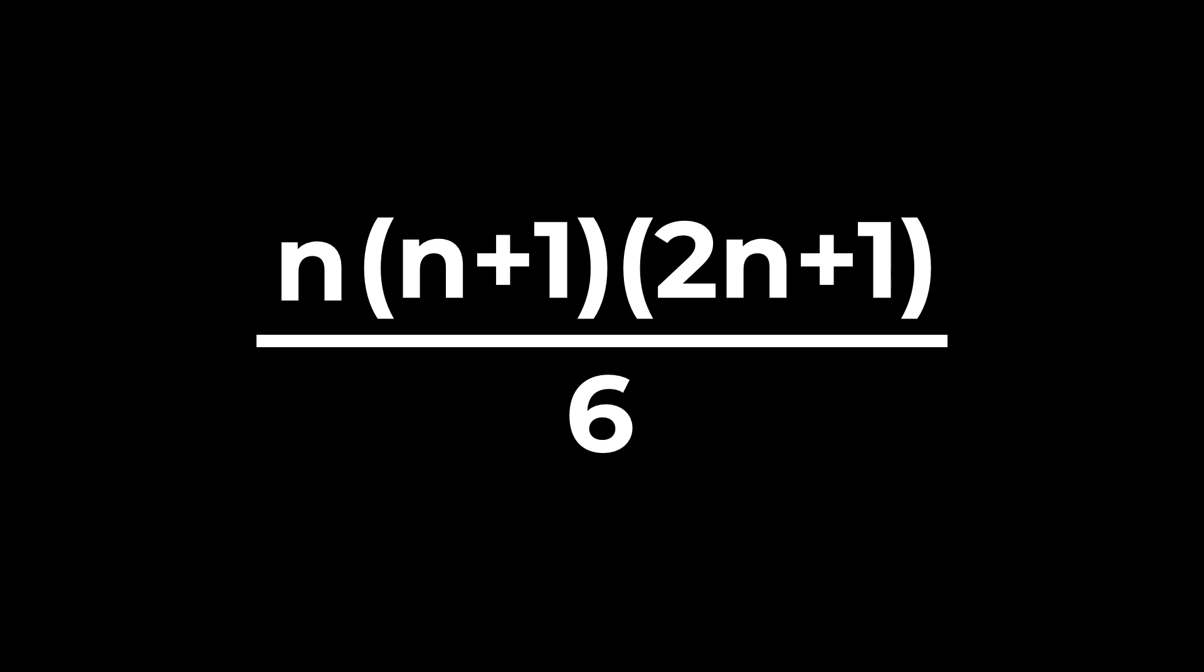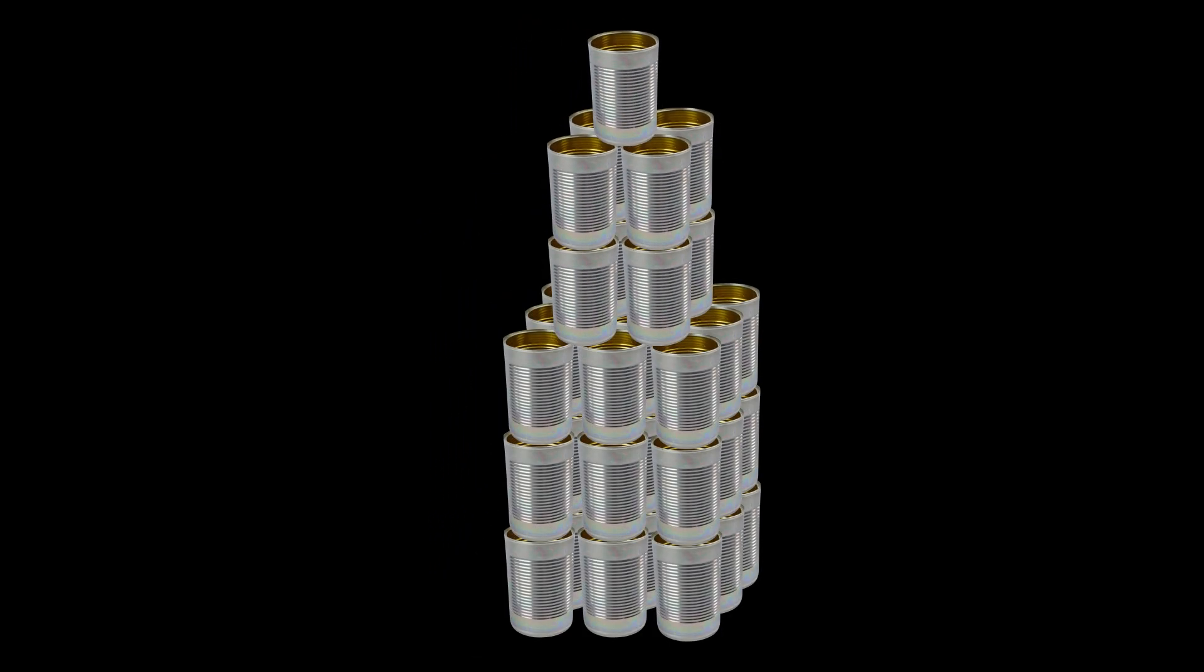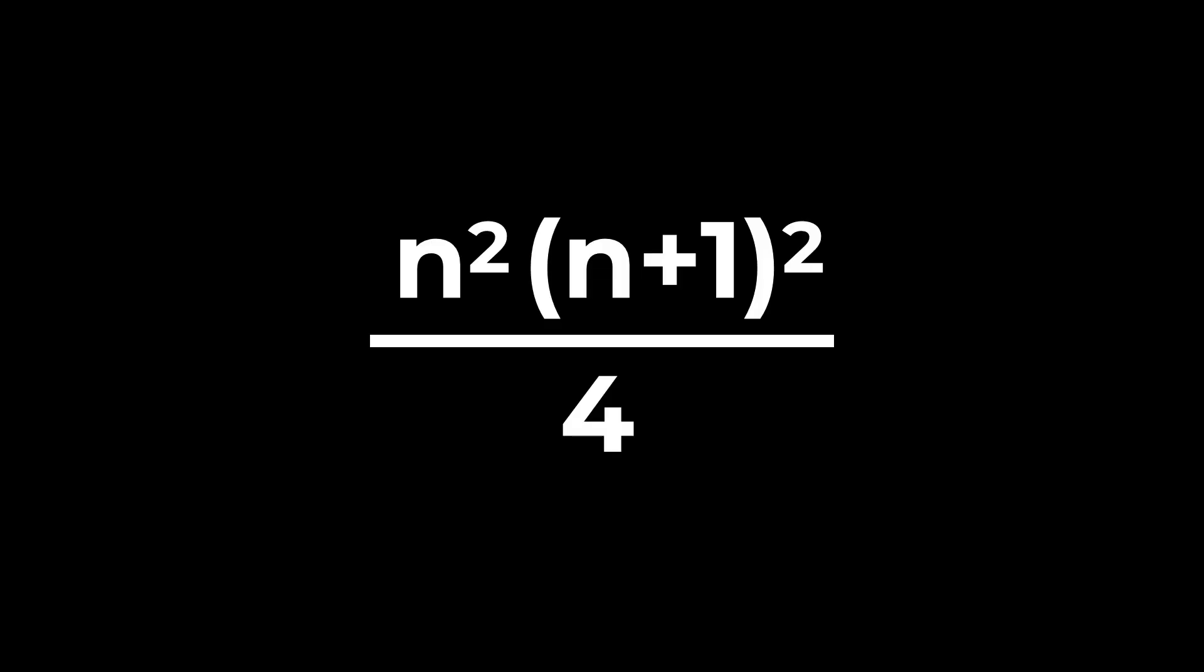And if I wanted to go on further than this, because of course mathematicians always do, I could have one can on top. I don't know why I would do this, but I could have a two by two by two cube of cans underneath that, and then a cube that's three by three by three cans underneath that. This is now just the sum of the cube numbers. And there is a general formula for this as well. And it looks like this. And these kinds of ideas have been thought about for a very long time. People have played with this particular bit of maths since a very, very long time ago.